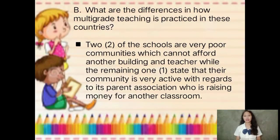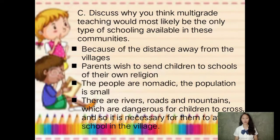Differences among the three case studies: two of them are very poor communities which cannot afford another building and teacher, while one states that their community is very active with its parent association raising funds for another classroom. Because of distance from the villages, parents wish to send their children to schools of their own religion, the people are nomadic resulting in a small population, and there are rivers, roads, and mountains which are dangerous for children to cross, so it is necessary for them to attend school in the village.